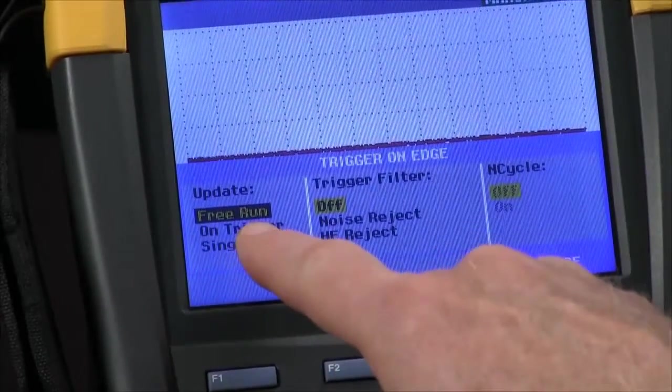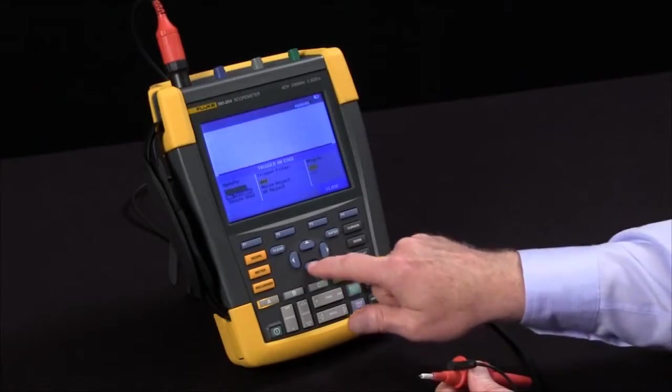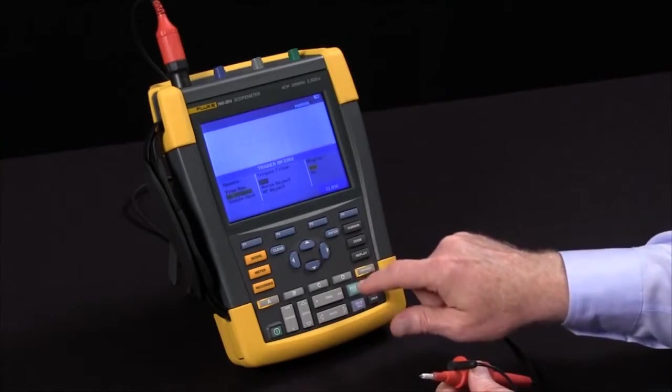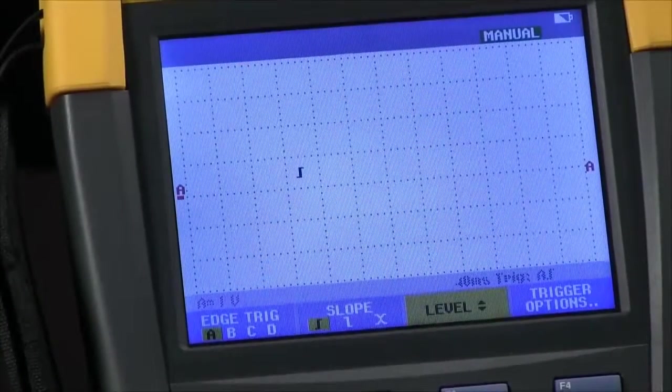I want to change from free run which lets the scope run all the time to on trigger where it waits for a trigger event. With that done, I'll close the window and I should be ready.